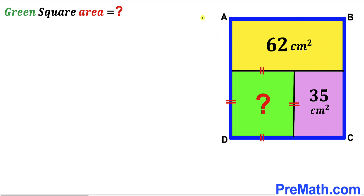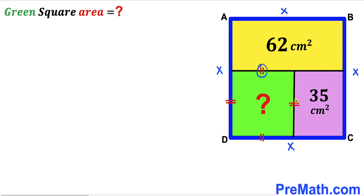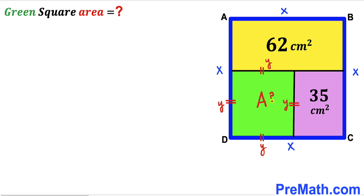Let's focus on the blue square ABCD. We know all its side lengths are equal. I'll label this side length as x, so all four sides are x. Now let's focus on the green shaded square — all its side lengths are equal as well. I'll label this side length as y, so all four sides are y. Finally, I'll label the area of this green square as uppercase A, and now we are going to find the value of area A.